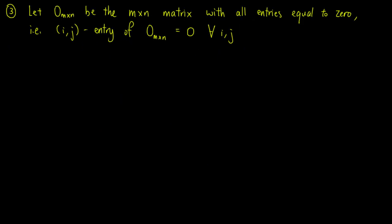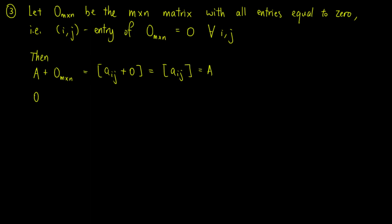For the third property, the m by n zero matrix is defined to be the matrix where all its entries are equal to zero — that is, the ij entry of the zero matrix is zero for all i, j. Then A plus the zero matrix equals the matrix with entries Aij plus zero, which equals the matrix with entries Aij, which is just A. Also, the zero matrix plus A equals the matrix with entries Aij, which is again A.